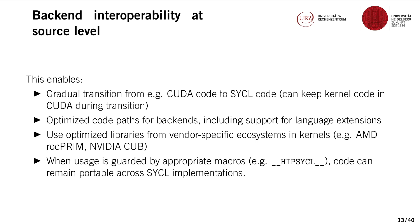This also enables using optimized libraries from hardware vendors and their ecosystems inside your kernels. For example, you can call AMD's rocPRIM library for parallel primitives inside your SYCL kernels. Of course, if you appropriately guard the usage of this functionality with macros to detect if it's supported, then you can still have code that is compatible with other SYCL implementations.